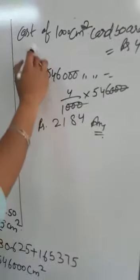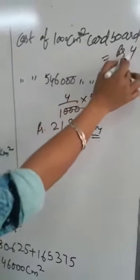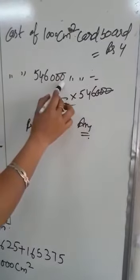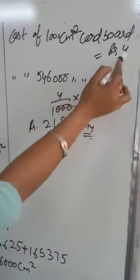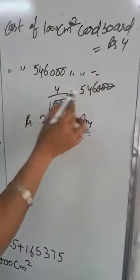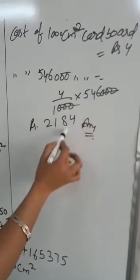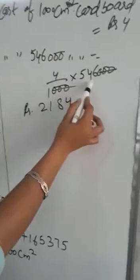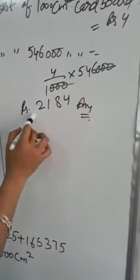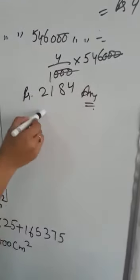And we have to find the cost for 5,46,000 cm square. So here we will use unitary method. Cost of 1000 cm square cardboard rupees 4, cost of 5,46,000 cm cardboard is equal to 4 divided by 1000 multiply 5,46,000. By cancelling these three zeros multiply 4 with 5,46 that is rupees 2184. So this is your answer.